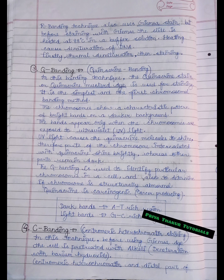The third type is Q banding that refers to quinacrine banding. In this banding technique, quinacrine stain or quinacrine mustard dye is used for staining. It is the simplest and the first chromosomal banding method. The chromosomes show a characteristic pattern of bright bands on a darker background. The bands appear only when the chromosomes are exposed to UV light.